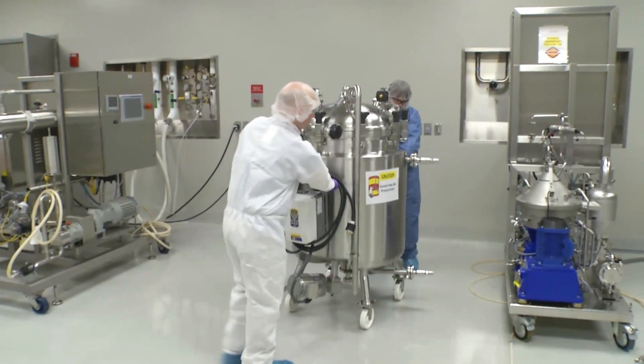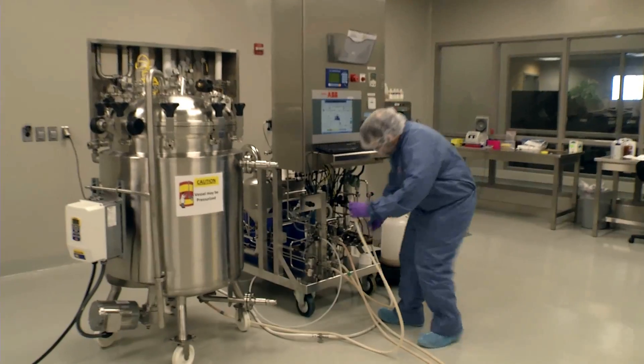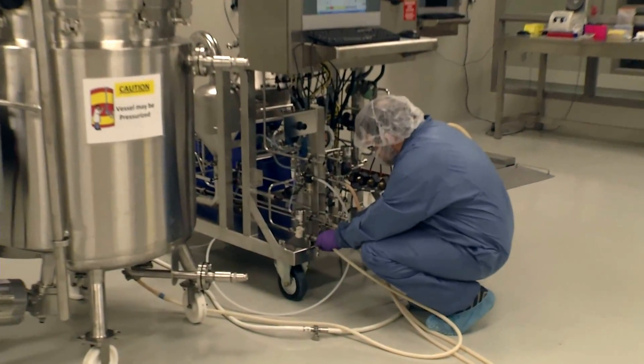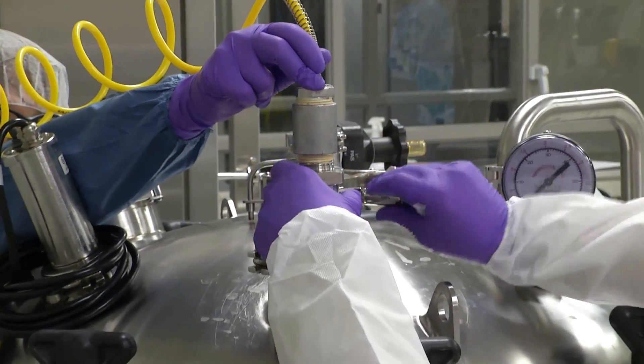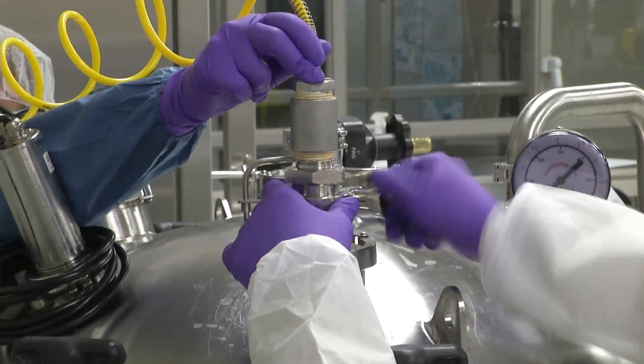GFP recovery begins with the arrival of the broth tank. A sterile hose is run from the broth tank to the disc stack centrifuge and the tank is pressurized to drive the broth into the centrifuge.